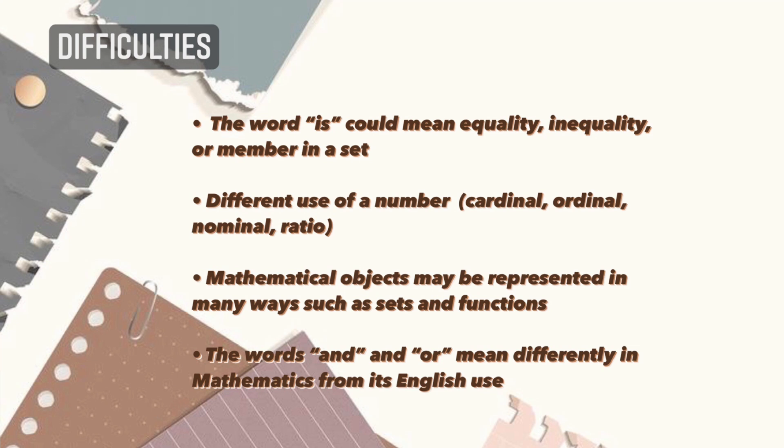The words 'and' and 'or' mean differently in mathematics from their English use. In sets, 'and' is used for intersection, and 'or' is used for union. It is also used in probability. There are a lot more words that have a different meaning in the language of English and in mathematics.